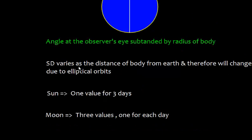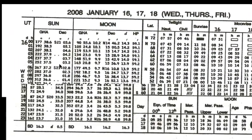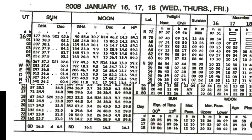The semi-diameter varies with the distance of the body from the Earth due to elliptical orbits — at times the sun or moon is closer, at other times it is further away. For the sun, the SD value is given for three days in the almanac. However, for the moon it is given for every day. For example, one page of the almanac covering days 16, 17, and 18 may show a sun semi-diameter of 16.3 arcminutes — the same for all three days. For the moon, the values change: 16.1, 16.2, and 16.3 for each respective day.